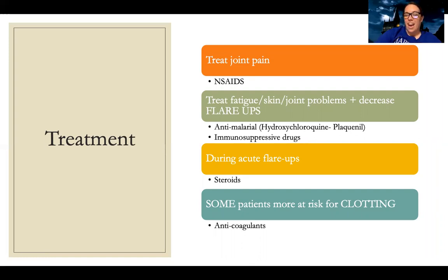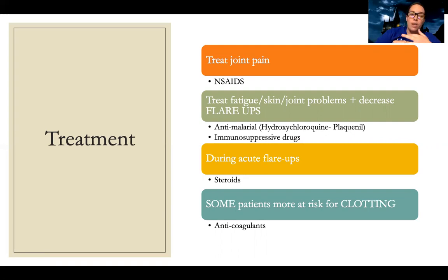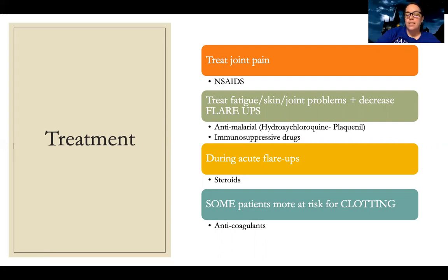Remember, this is the body attacking itself. During acute flare-ups, steroids are used, but we really want to limit the amount of steroids, use the lowest dose possible, and taper them as soon as possible because there are so many possible complications and they can sometimes make things worse. Some patients are more at risk for clotting depending on how their disease presents, and they may need to be on anticoagulation.